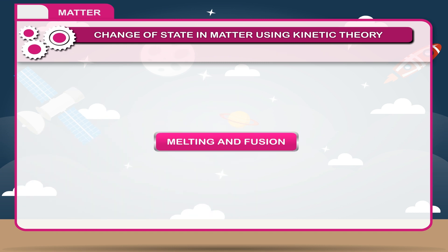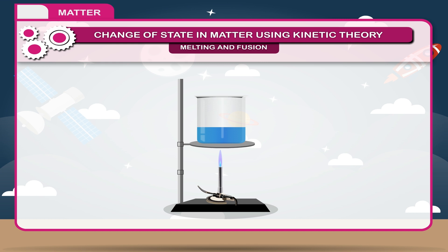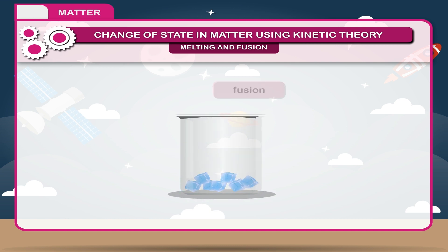Melting and fusion. The change from solid to liquid state is called melting. The process takes place at a constant temperature when heat is applied. The reverse change from liquid to solid is called fusion. This process takes place when heat is rejected at a constant temperature.